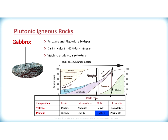Gabbro would contain a high percentage of calcium-rich plagioclase feldspar, a lower percentage of hornblende, a high percentage of pyroxene, and a moderate percentage of olivine. In conclusion, gabbro consists of these four minerals and has the same composition as basalt, but forms in a plutonic environment. Both basalt and gabbro can have mafic compositions, but they have different textures.